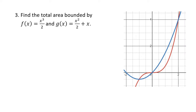Here's another example where we're given a picture of the region and asked to find the area. We're given two functions both solved for y: y equals x cubed over 2 and y equals x squared over 2 plus x, so it makes sense to integrate by slicing vertically. The wrinkle is that which function is on top changes as we go from left to right, so we'll need two separate pieces of area, A1 and A2.